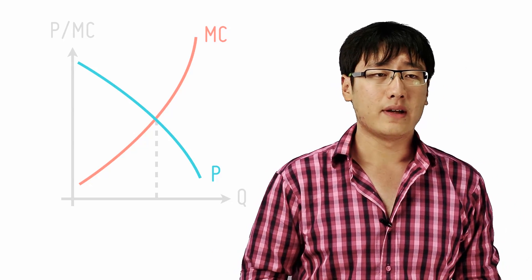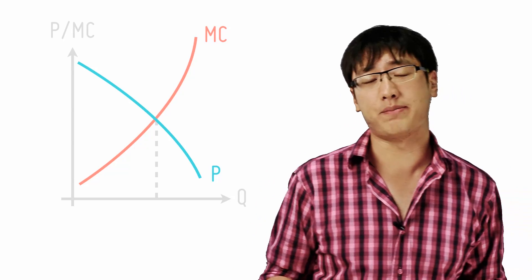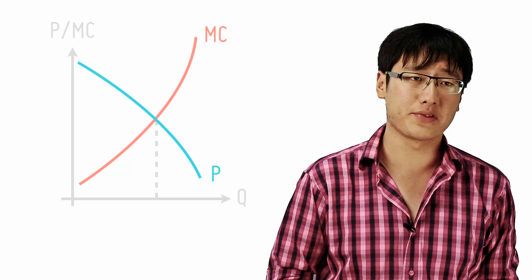Now let's introduce a new concept. Allocative efficiency also happens when the price of your good equals the marginal cost. Why is that so?